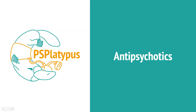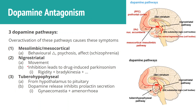Today we're going to be talking about antipsychotics. The main principle behind them is dopamine antagonism. There are three main pathways that utilize dopamine that we need to understand, not only to understand why it works as an antipsychotic, but also to understand the side effects of them.